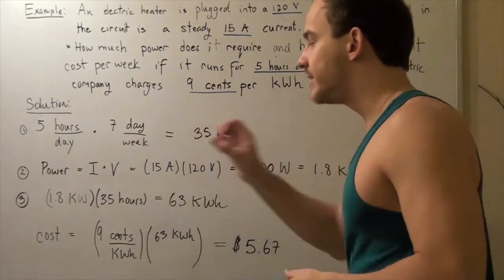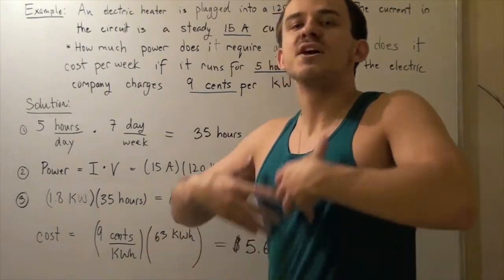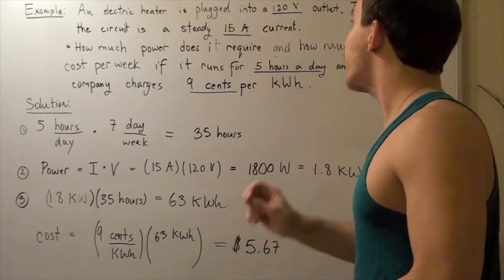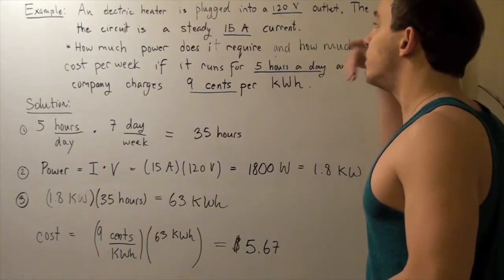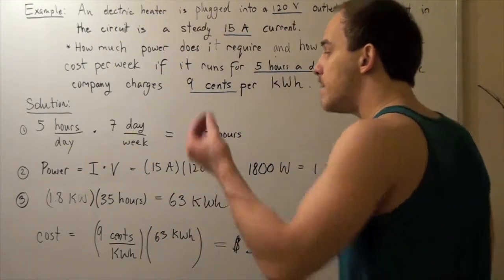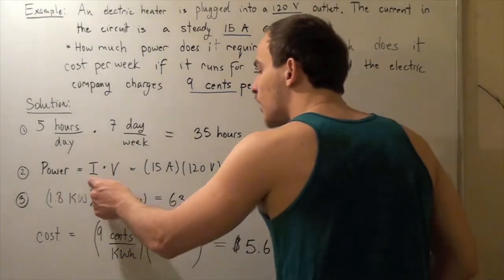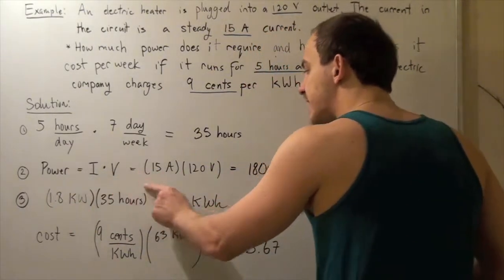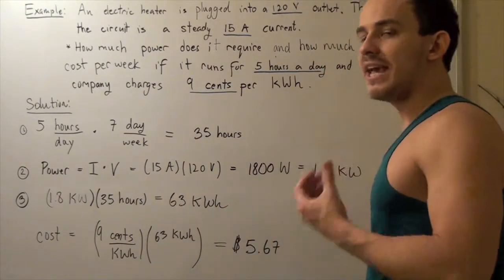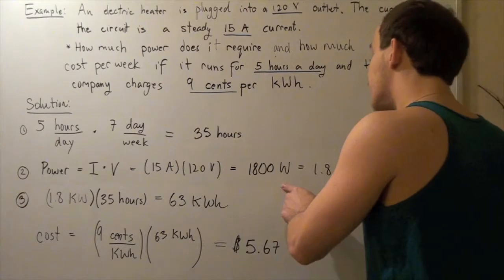In step two, we find the power the electric heater requires. Power is given by current times voltage, so we take 15 amps multiplied by 120 volts and we get 1800 watts.